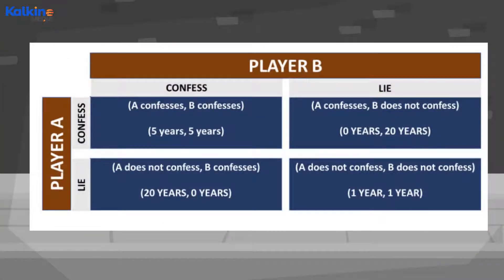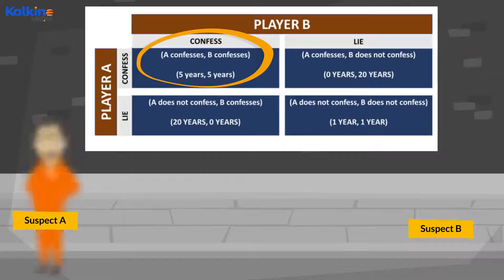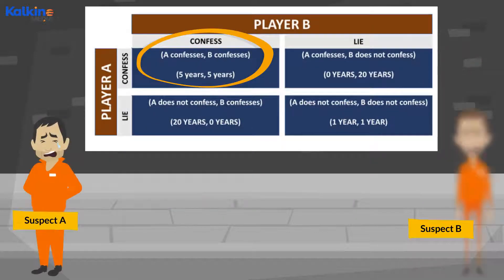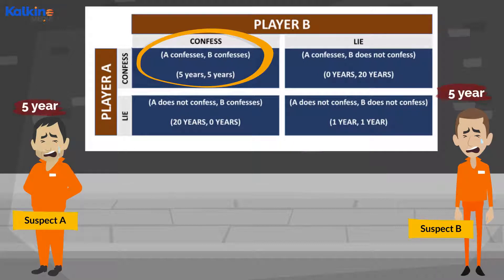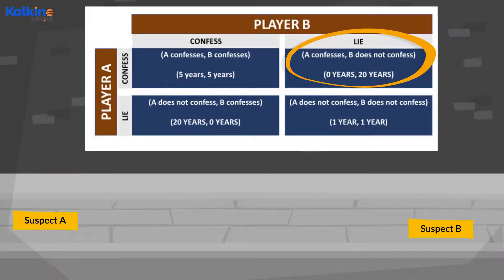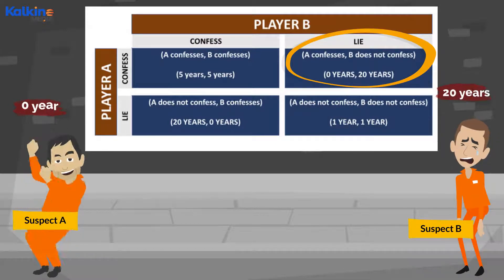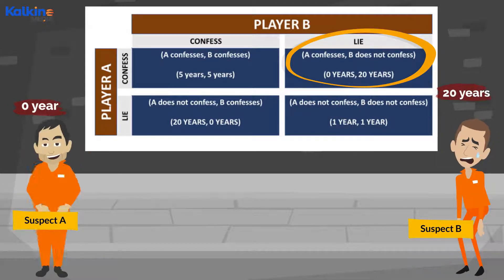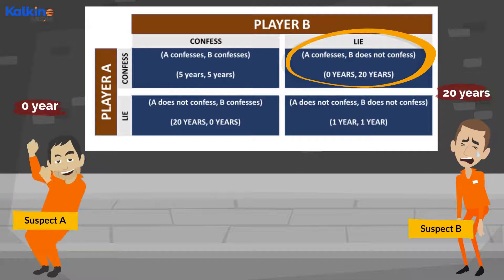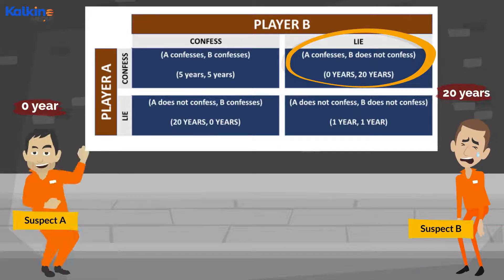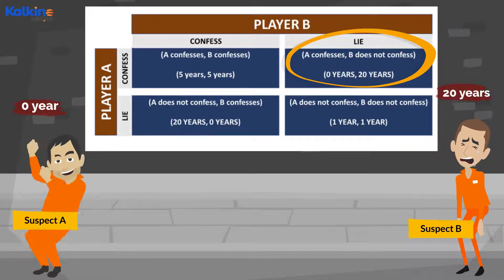Now, there are four possible outcomes. First, both A and B confess — here both would face five years of jail time. Second, A confesses and B does not confess — here A would not face any jail time. However, B would face 20 years in jail.